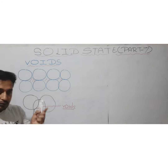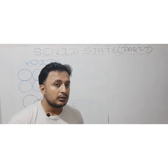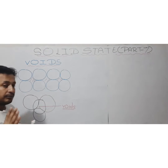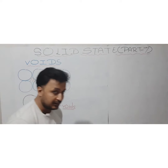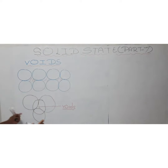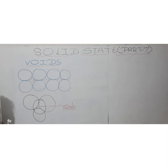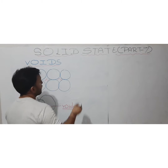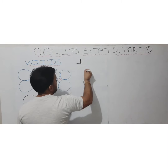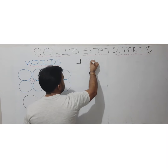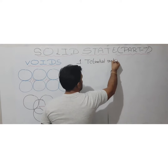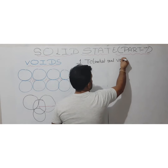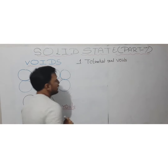There are two different types of voids that arise due to differences in the packing system. We'll see them one by one. The first type is known as the tetrahedral void.